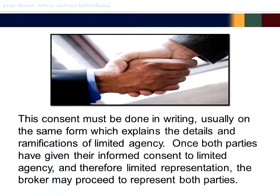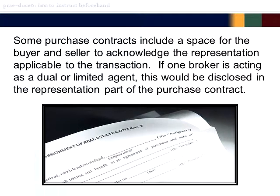Once both parties have given their informed consent to limited agency, and therefore limited representation, the broker may proceed to represent both parties. Some purchase contracts include a space for the buyer or seller to acknowledge the representation applicable to the transaction. If one broker is acting as a dual or limited agent, this would be disclosed in the representation part of the purchase contract.